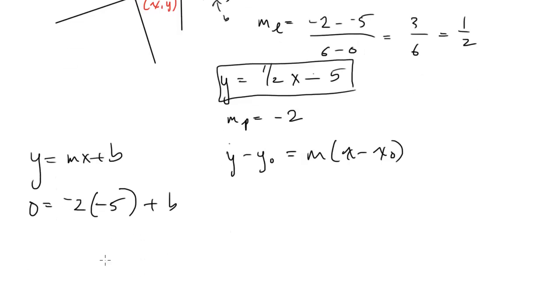Solving for the b value. So I get 0 equals 10 plus b, which means b is negative 10. So finally my equation for line P is going to be y equals negative 2x minus 10.